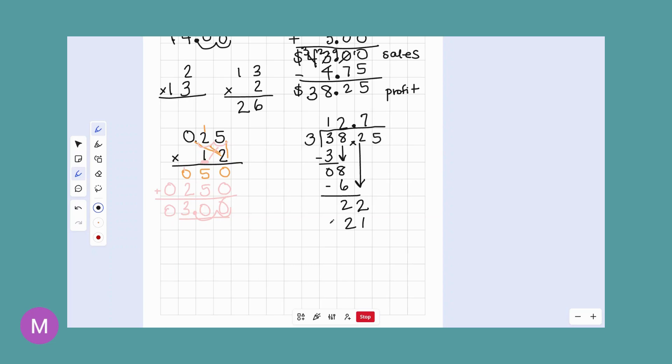There's going to be one left over. Bring down the five. Three into 15, five. Five times three is 15. So we have nothing left over. So each person earns $12.75.